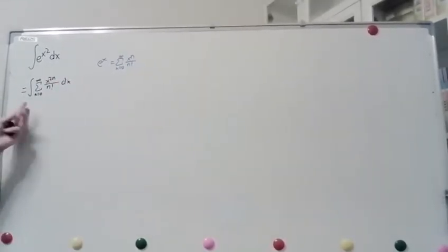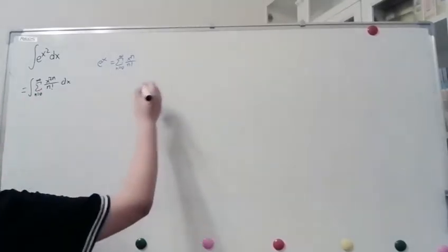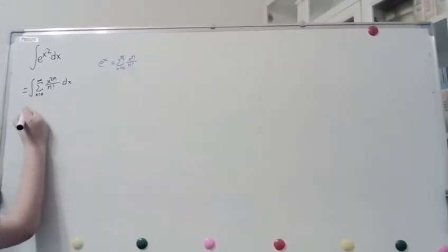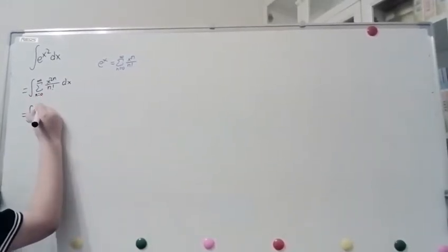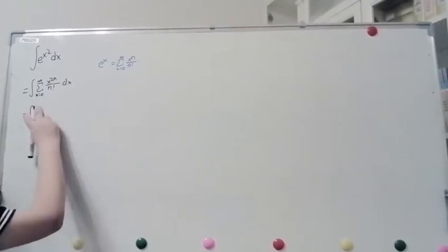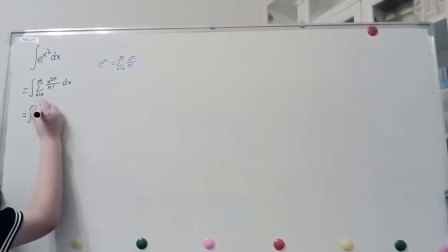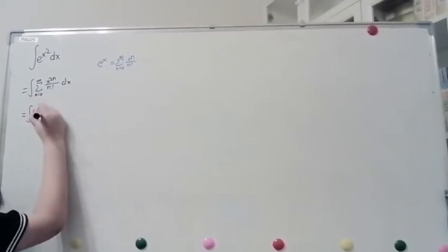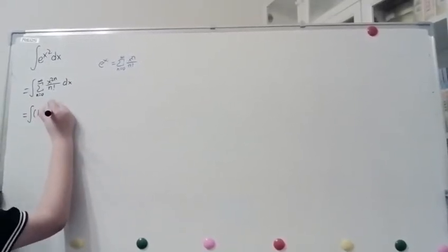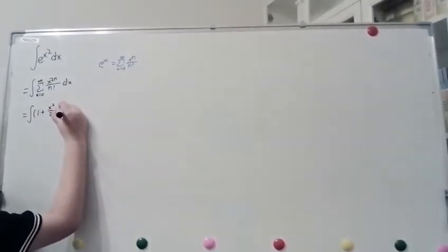Now, we can switch these two symbols, because if I write this out, we have the integral of x to the 0, that's just 1, 1 over 0 factorial, which is also 1, and then plus x squared over 1 factorial, and then plus x squared over 2 factorial.